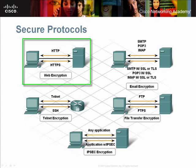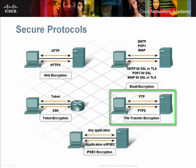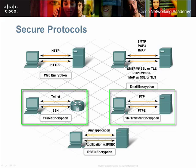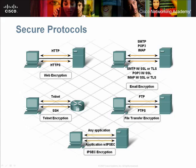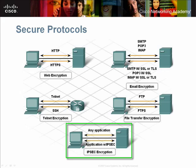Examples of secure protocols include HTTPS, which is a secure version of HTTP; FTPS, which provides secure file transfer services; and SSH, which provides secure terminal emulation. When secure communications must occur, these protocols should be used. If an application does not have a secure version of a protocol, IPSec, which works at the network layer, can be used to encrypt any application layer traffic.